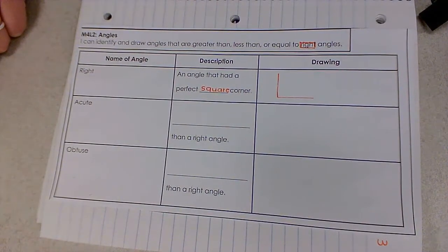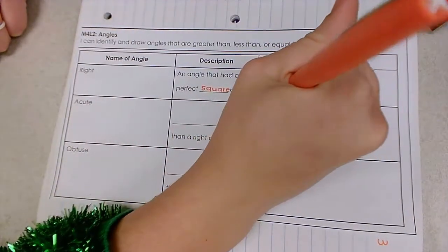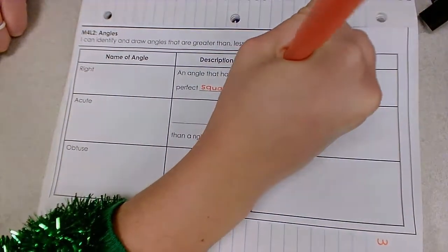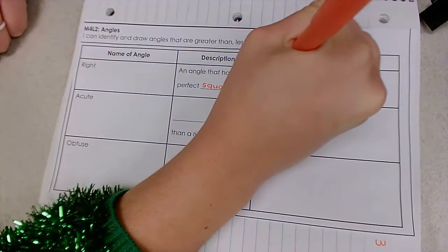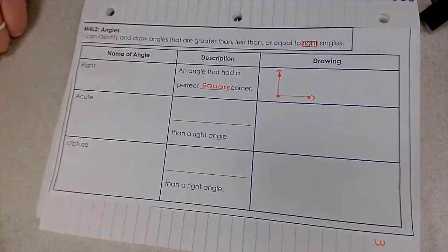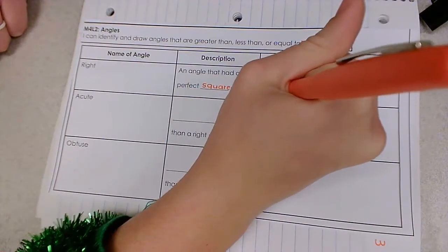Remember that we label angles with points. So let's say that this is two rays meeting at point B.